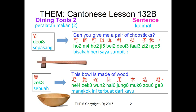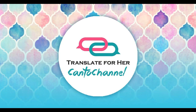This bowl is made of wood. 這隻碗是用木做的。 可唔可以比對筷子我?